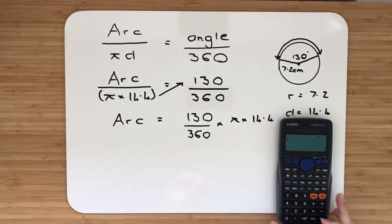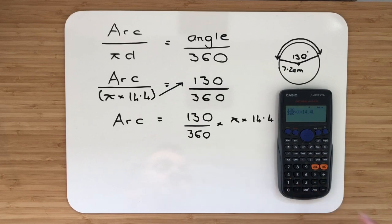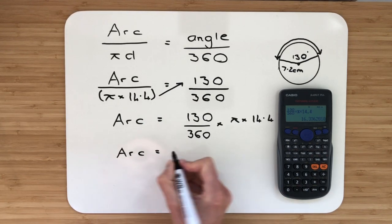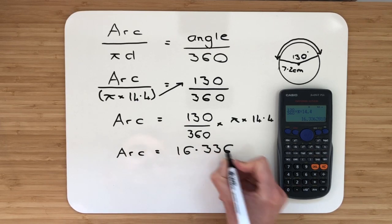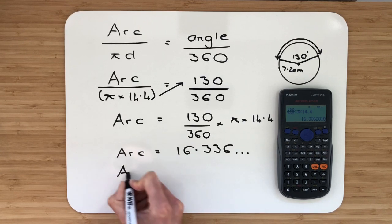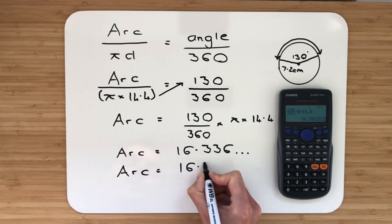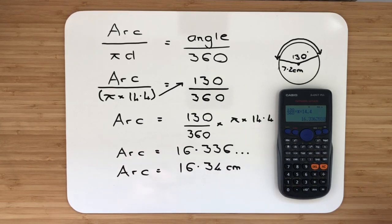Arc is equal to 130 over 360 multiplied by pi multiplied by 14.4. Let's take a calculator again. I've got my fraction button, 130 over 360. I will multiply by pi and multiply by 14.4. Putting all that in, that's going to give me arc is equal to 16.336 and it continues on. Rounding, the arc will be equal to 16.34. Don't forget your units. Centimetres.